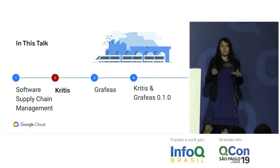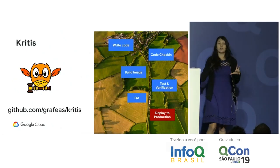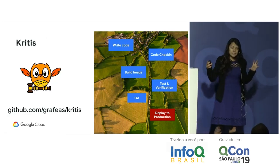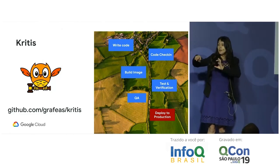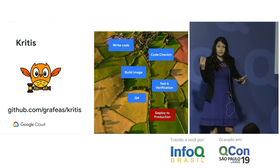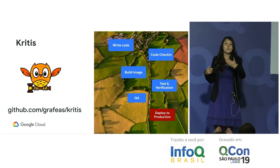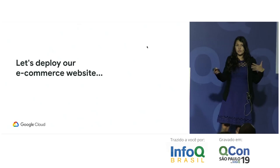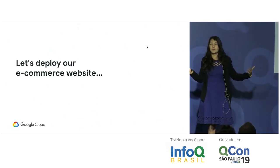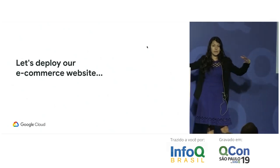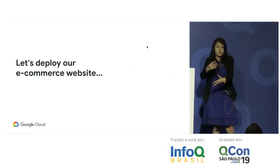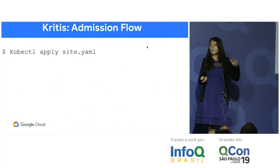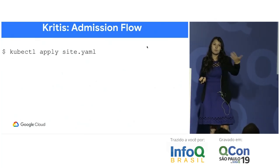Kritis was developed open source first — all code and commit history is available on GitHub at grafeas/kritis. In the software supply chain it fits at the very end, during deploy time. When you deploy to production it verifies against your defined policies and either accepts or rejects the deploy request. Imagine deploying an e-commerce website: you run kubectl apply site.yaml, which defines your pod with the image being deployed.